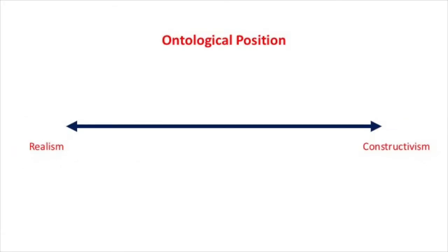Your response to these questions might reveal that you assume the social world to be external to individuals, an objective reality, thereby situating yourself towards the left-hand side of our ontological dimension arrow. However, you might assume that the social world is a product or construction of individuals' consciousness, a subjective or constructed reality, thereby positioning yourself with constructivism.